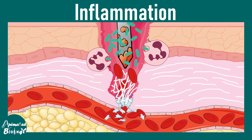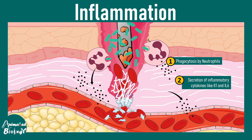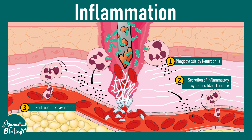Neutrophils are the fast responders that go to the injury location to engulf and clear bacteria from the site. Neutrophils also secrete molecules that attract other neutrophils and inflammatory cells to the vicinity. Circulating neutrophils within blood vessels roll slowly, undergo cytoskeletal rearrangement, and squeeze themselves out from the blood vessel into the tissue space — a process known as diapedesis. This neutrophil extravasation is a hallmark of acute inflammation.